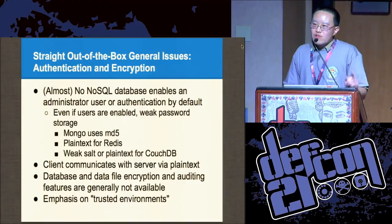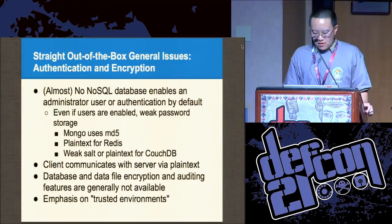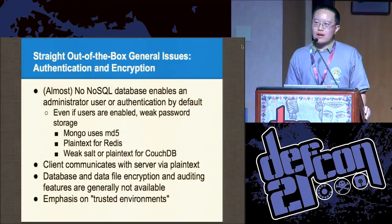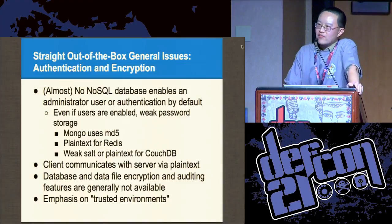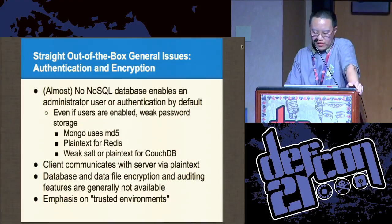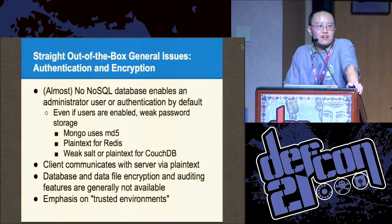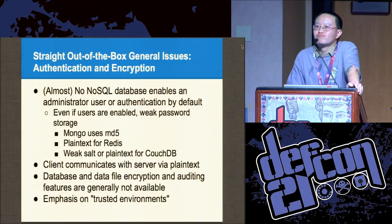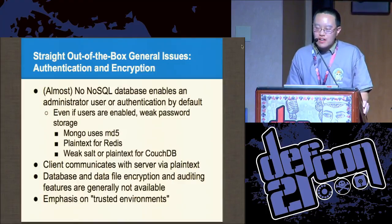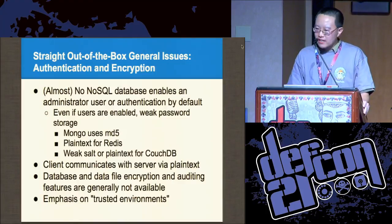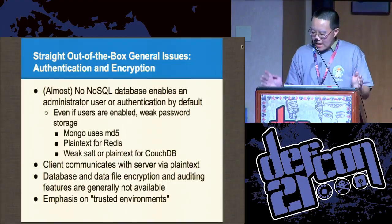If you ever read the documentation of Mongo, Couch, Redis, or Cassandra, there is one line which I find very surprising. In common with each and every one of these systems: "We urge you to use this database system on a trusted environment." That's from the documentation. It's quite mind boggling — security is a complete afterthought.